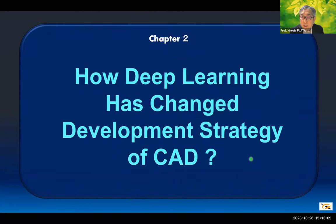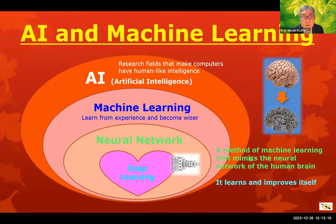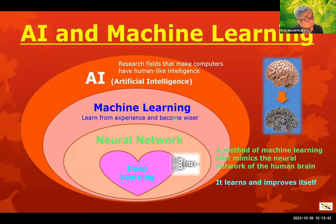Let's take a look at how deep learning changed the development strategy of CAD. The figure on this slide shows the relationship between AI, machine learning, neural networks, and deep learning. AI is the research field that makes computers have human-like intelligence. Machine learning learns from experience and becomes wiser. Neural networks is a method of machine learning that mimics the neural network of the human brain. And deep learning learns and improves itself.